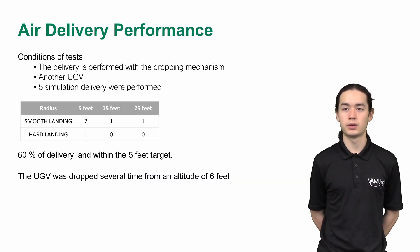We tried our air delivery system five times with another UGV. We have a 60% chance of reaching the target within five feet. We also dropped the current UGV several times from an altitude of six feet in order to evaluate its resistance. Therefore, the team is confident the UGV will be delivered safely and precisely.